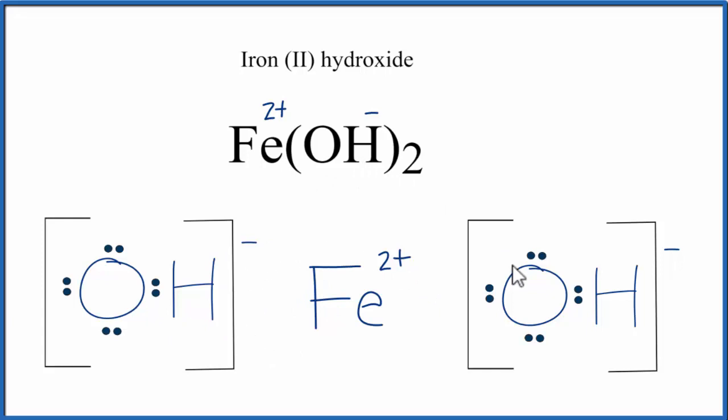Do understand that what we've drawn is a formula unit. Iron (II) hydroxide, that's normally a crystal, and it's made up of a repeating pattern of these formula units. But this is useful because it tells us where the electrons have been transferred to, and the structure of that formula unit.